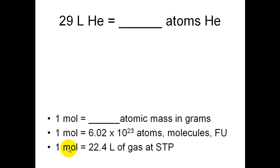In our first example, we're looking at 29 liters of helium, and I want to find out how many atoms are present in that. So let's start out the problem by writing the givens down. The givens are going to be 29 liters of helium, and I also want to write down the other given, which is atoms. So I want to express my answer in the number of atoms of helium.